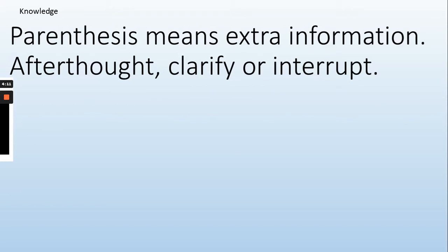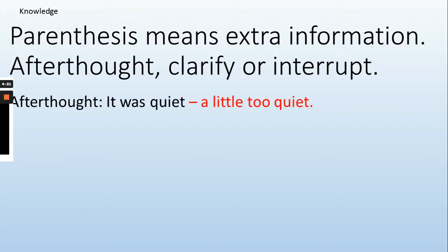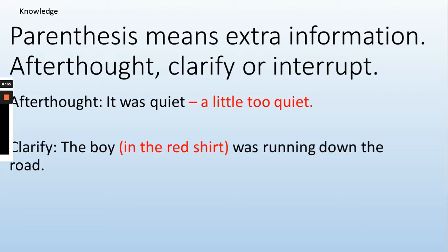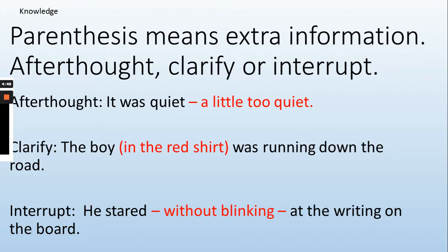Let's look a bit closer. Parenthesis means extra information: afterthought, clarify, or interrupt. Afterthought — 'It was quiet — a little too quiet.' See how extra information is added at the end with a dash. Clarify — 'The boy (in the red shirt) was running down the road.' I clarified which boy was being talked about using brackets. Interrupt — 'He stared — without blinking — at the writing on the board.' See how I interrupted the narrative to add extra information with a pair of dashes.